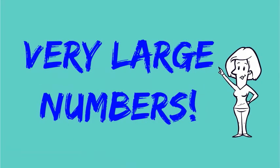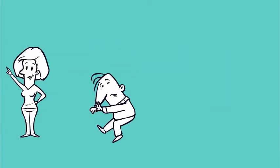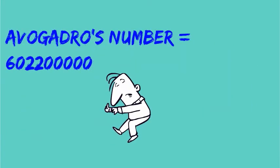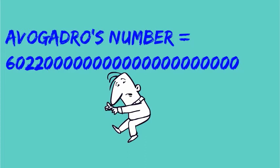In chemistry in particular, we're going to be working with a lot of very big numbers. One example is Avogadro's number, which we're going to use throughout the semester. It's a very big number with a lot of zeros.